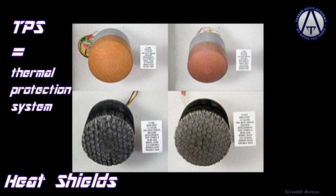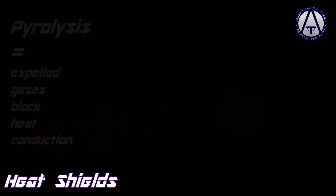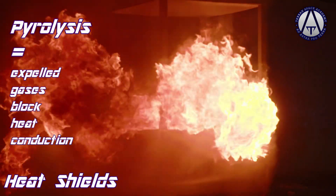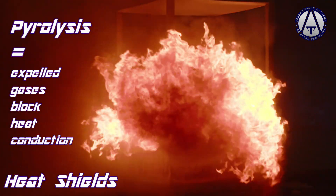The Apollo command capsules used a heat shield made of honeycombed fiberglass and phenolic resin called Avcoat, named for the company Avco that produced it. Applied in layers, as the capsule fell through the atmosphere these layers would burn away — called sublimation — carrying heat away with them. The materials also underwent a process called pyrolysis where gases produced from the burning shield block heat transmission. This is called an ablative heat shield.